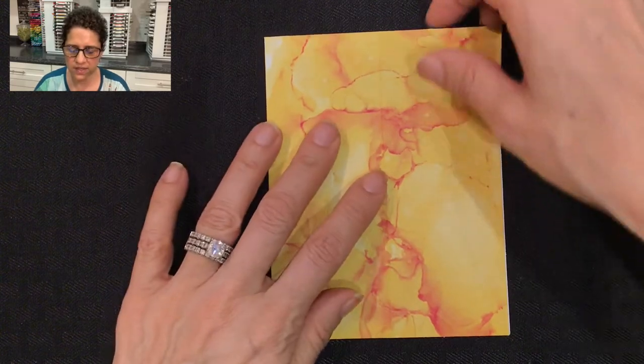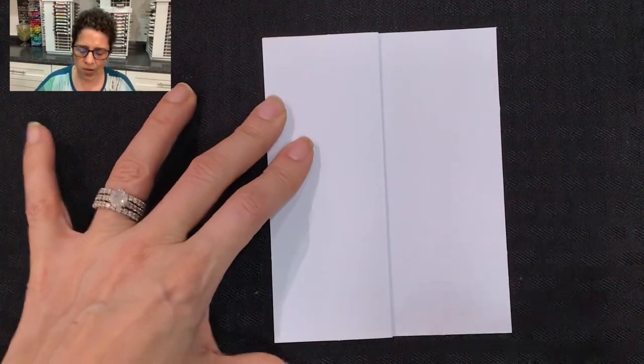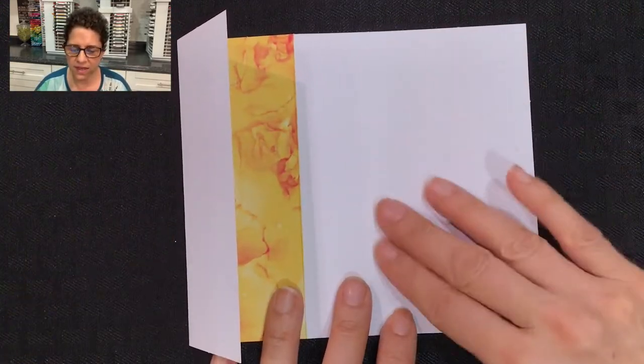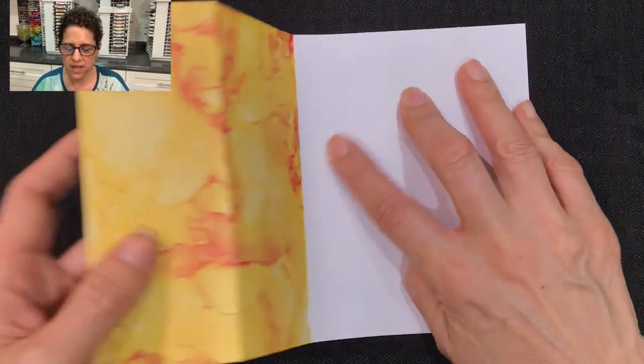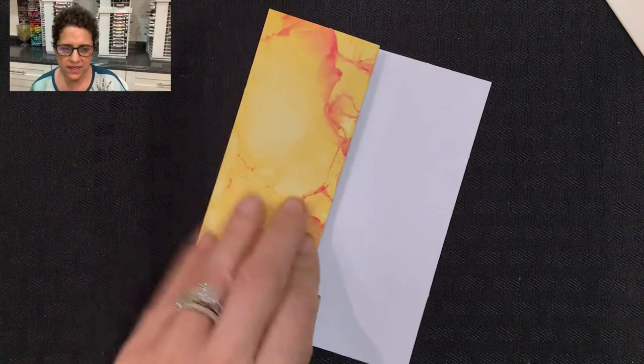The first thing I'm going to do is take this card base and fold it back. I'm going to score it like so. Then I'm going to flip it upside down so I'm going to have this now be the inside of the card. I'm going to fold it forward and fold it back like that.